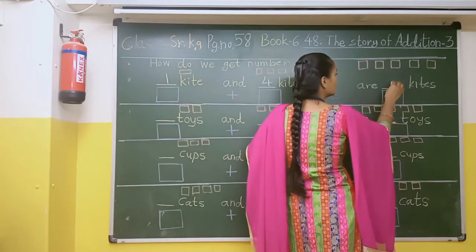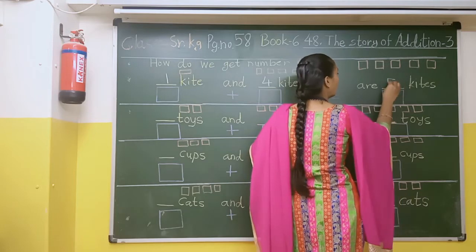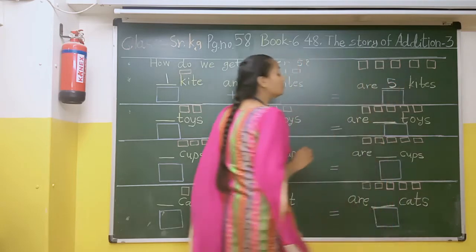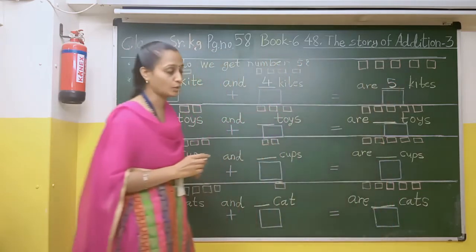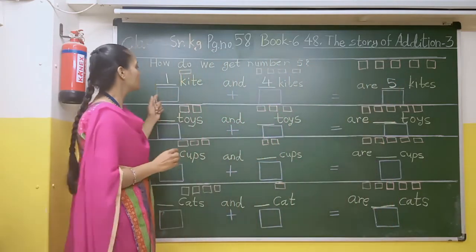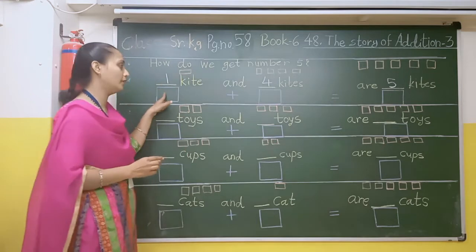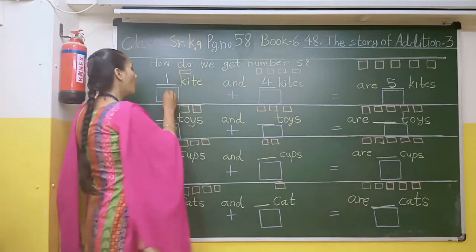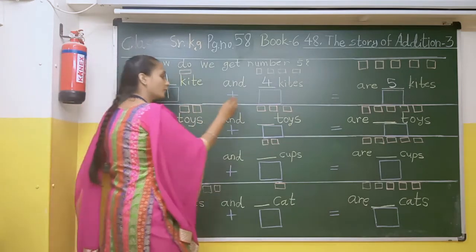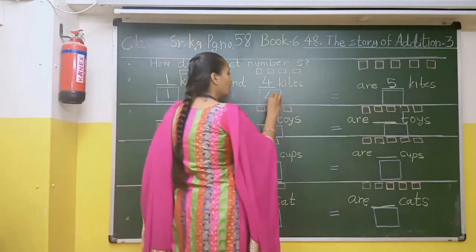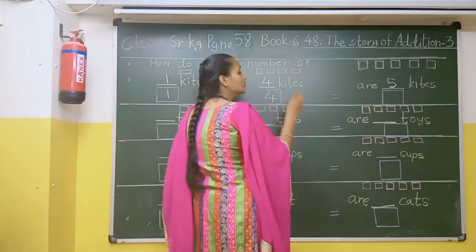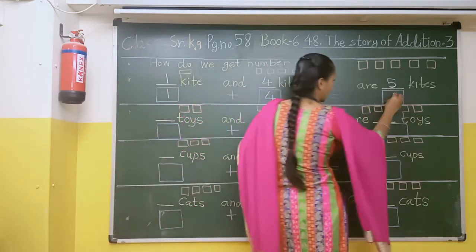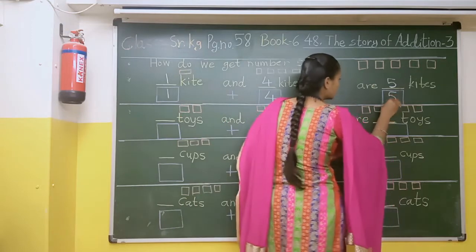1, 2, 3, 4, 5 — totally 5 kites. So here we will write 1 plus 4 is equal to 5.